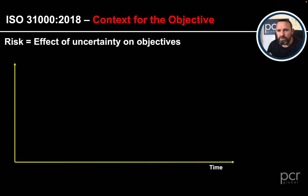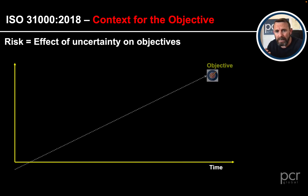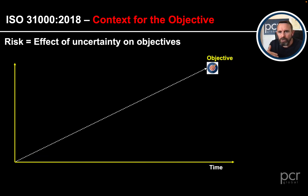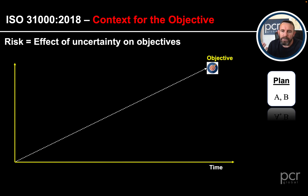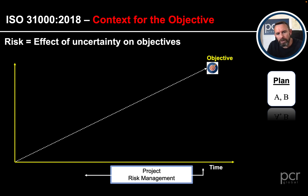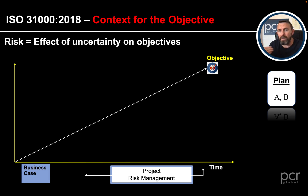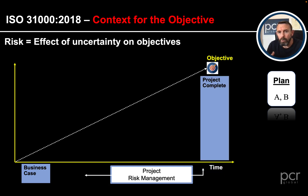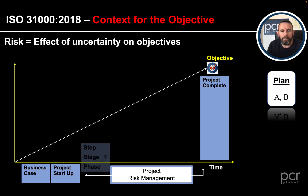Now let's apply that definition of risk to an actual objective. On the screen we have an objective with a timeline across the bottom set up for project risk management. We always need a plan. The general phases of a project shown are: business case - are we going to do the project, yes or no - then a complete project at the end, with project startup in between.